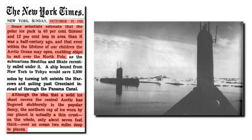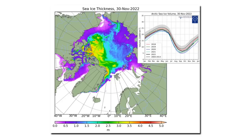I find the last paragraph of this article particularly interesting. Although the idea that a solid ice sheet covers the central Arctic has lingered stubbornly in the popular fancy, the northern cap of ice worn by our planet is actually a thin crust, on the whole only about seven feet thick. In 1958, the North Pole was covered by about two meters of sea ice. And now, 64 years later, the sea ice at the North Pole is about two meters thick — just like it was in 1958.